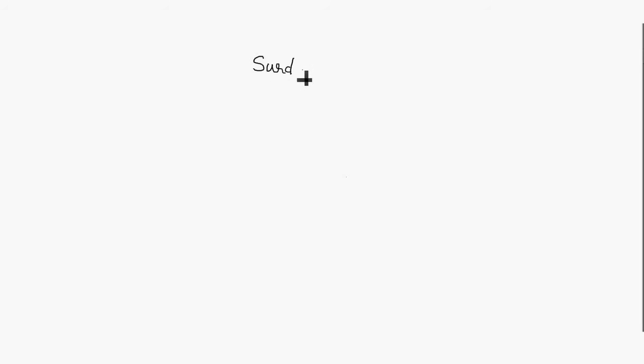Let us understand what are surds. The general form of a surd is given by nth root of a, where a is a positive rational number - that is, a belongs to rational numbers and a should be greater than 0.